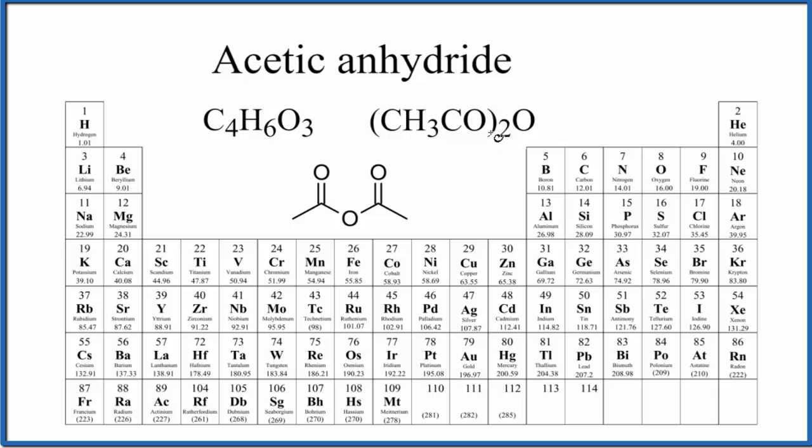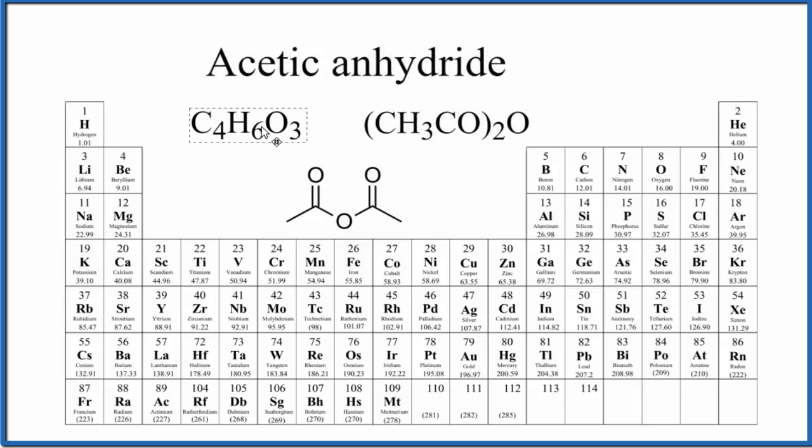This one has a little more information. This oxygen here is showing us we have an oxygen here, and then we have two of these groups here. So either way, same thing, just written a little different. Let's use this one here to find the molar mass for acetic anhydride.